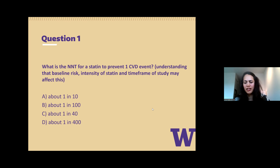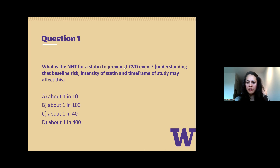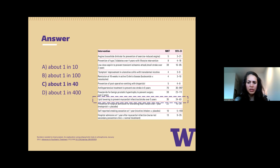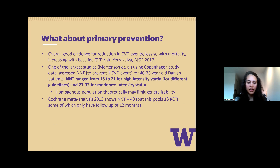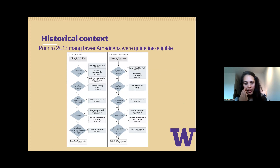The answer is actually more like one in 40. When I made this talk I thought it was one in 400, so I was pleasantly surprised. I don't want to focus too much on this, but statins are a very good tool even for primary prevention, which I think sometimes gets lost. Compared to a lot of other things we do in primary care, statins are pretty high up there in terms of number needed to treat for primary prevention.